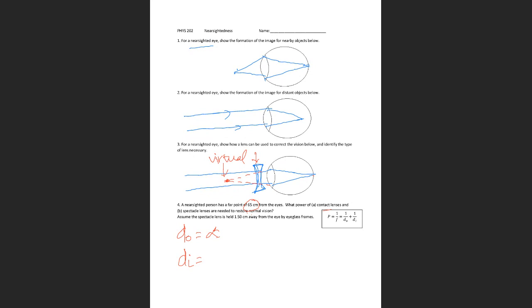The image distance is going to be at the far point, and the eye will take care of the rest. It should be 65 centimeters, but this is minus because it's a virtual image. Make sure you put the negative sign, so minus 0.65 meters.